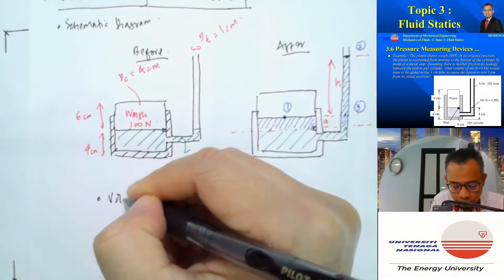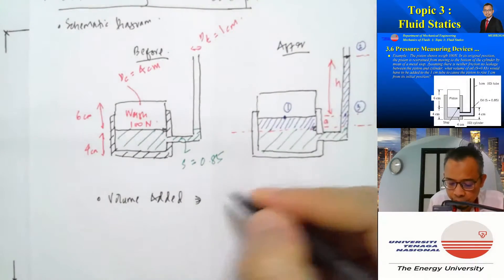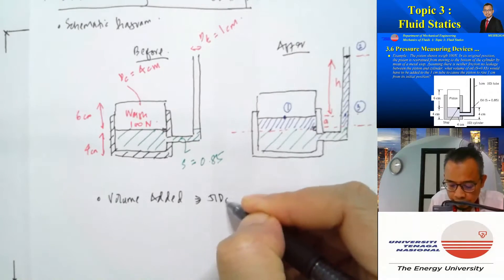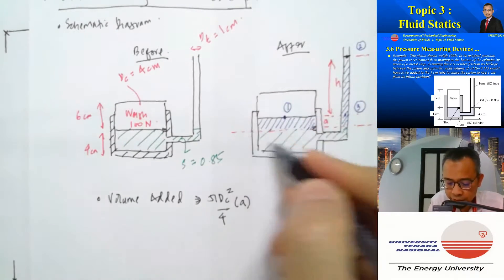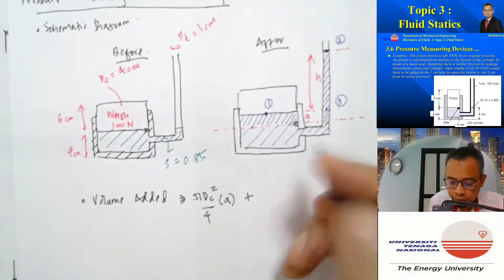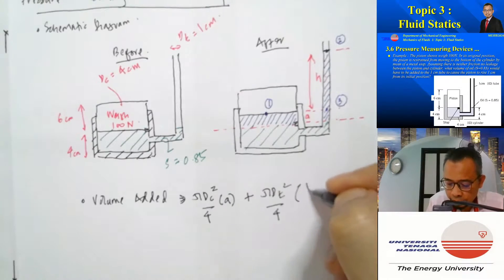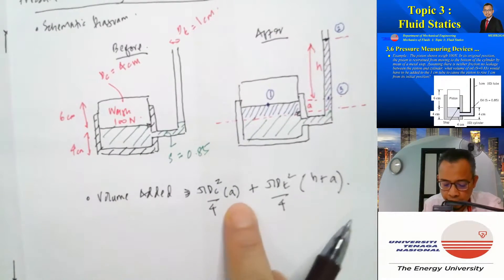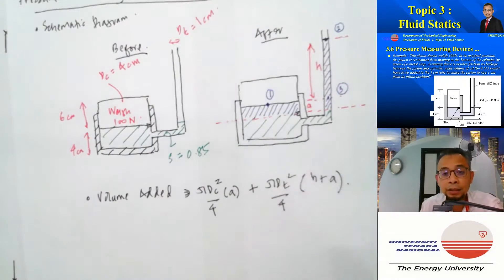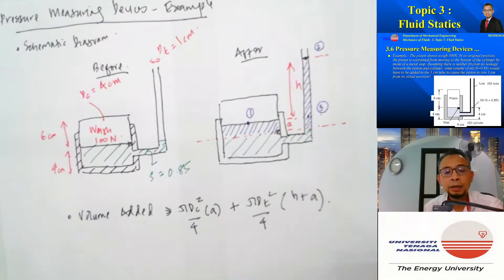The volume added equals (π × d_c² / 4) × A for the cylinder portion, plus (π × d_t² / 4) × (H + A) for the tube portion. We know A = 1 cm, d_c = 4 cm, and d_t = 1 cm. The only unknown is H, so we need to apply the hydrostatic equation to find H.